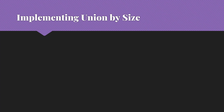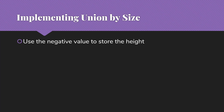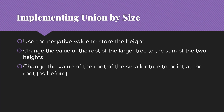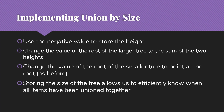Let's look at what these actually look like, starting with the union by size implementation. We need a place to store the size, so we're going to use that negative value we've been using — instead of just minus 1, we'll store the negative of the size of the tree. Then when we do our union, we change the value of the root of the larger tree to the sum of the two sizes, and change the value of the root of the smaller tree to point at the root of the larger tree. Notice that storing the size of the tree allows us to efficiently know when all items have been unioned together, which is very useful for many applications of disjoint sets.